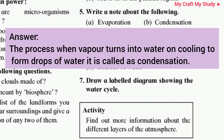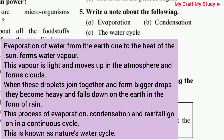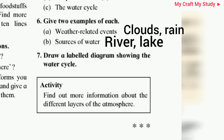Question 5 continued — second: condensation; third: the water cycle. Question number 6: Give two examples of each — a) weather-related events: cloud, rain; b) sources of water: river, lake.